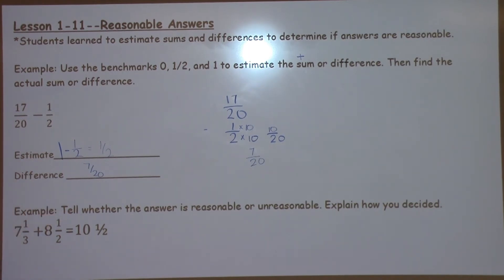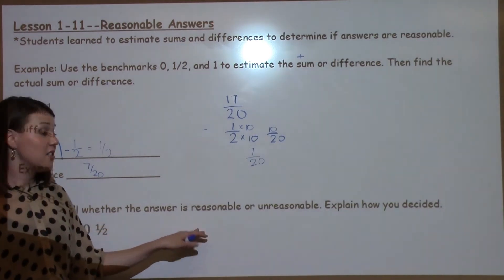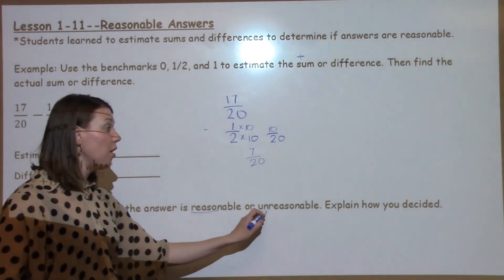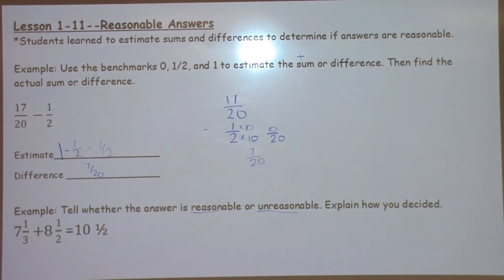The next question says, tell whether the answer is reasonable or unreasonable, and explain how you decided. Well, this question doesn't even ask us to find the answer. We have to decide, is it reasonable or unreasonable, and then explain how we decided. Looking at this question, I'm going to start off with my whole numbers.